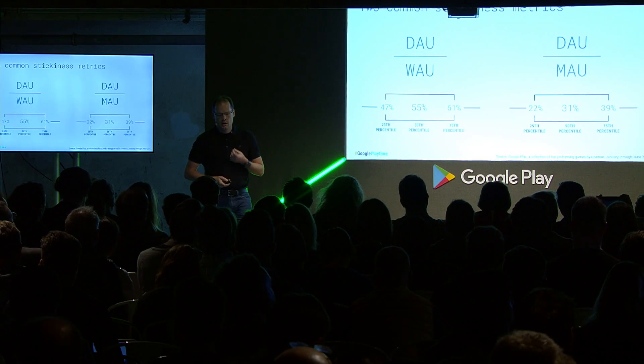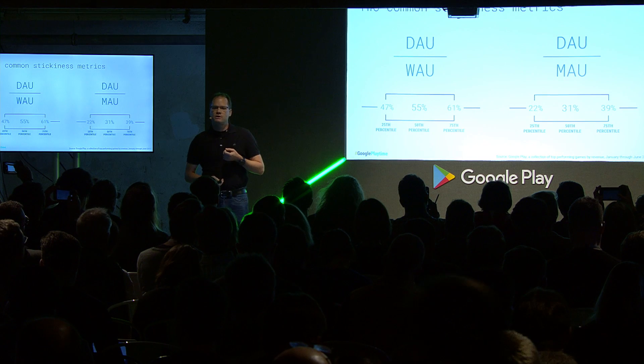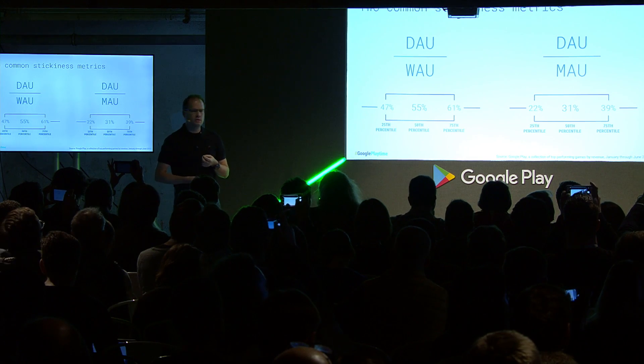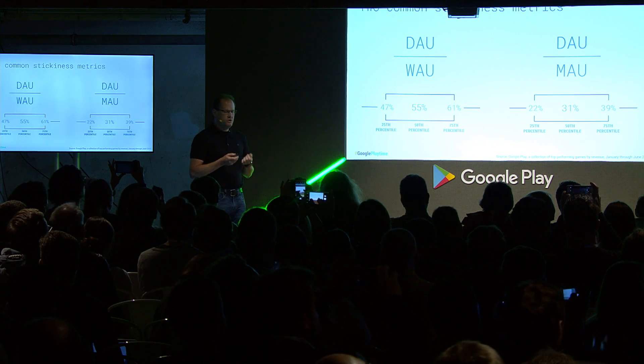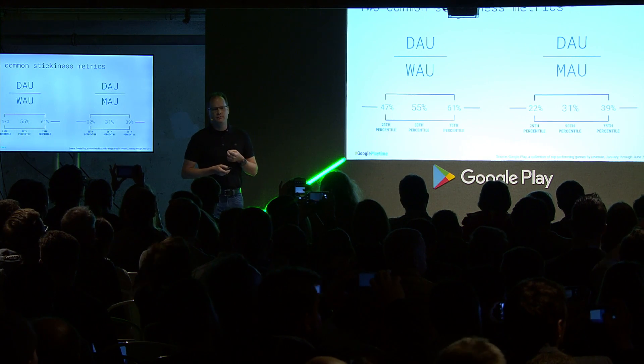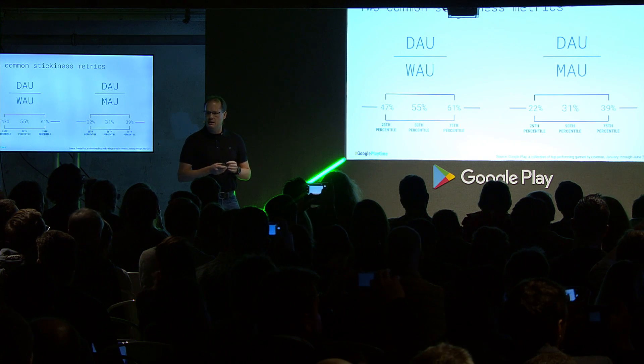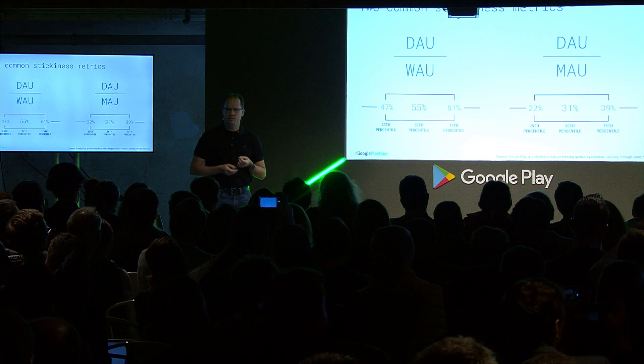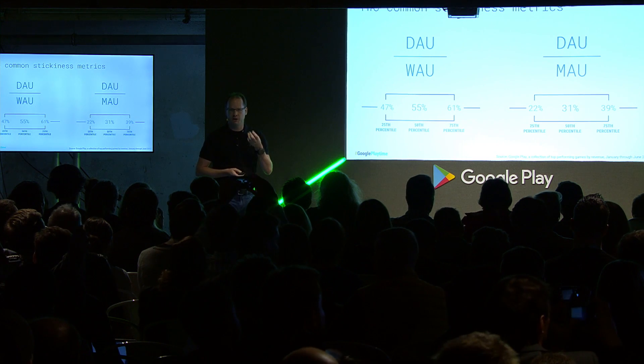Players — veteran players — churn out of the game. New installs churn out because of poor retention. Even our frequent users don't come back each and every day due to a lack of strong return mechanics. There are two common stickiness metrics that a lot of developers look at: the DAU-WAU ratio and the DAU-MAU ratio. To give you some ideas of what you should shoot for: 55% for a DAU-WAU ratio will put you right at the median, and 31% for that DAU-MAU ratio is again a good starting place to shoot for — but ideally you want to be much better than that.